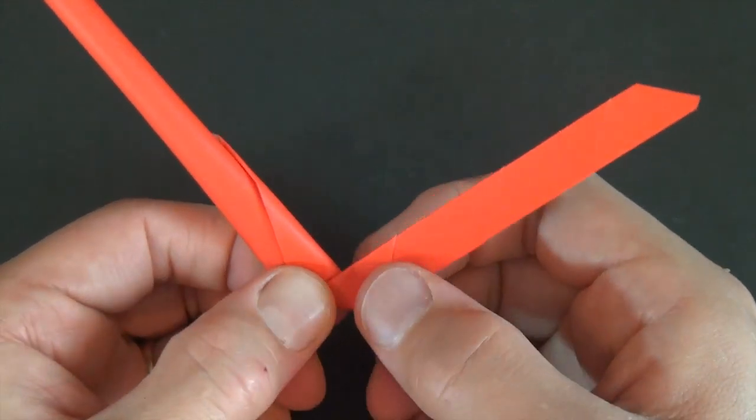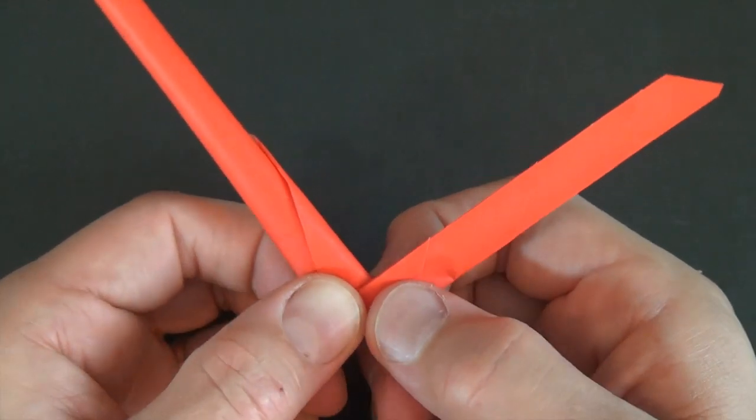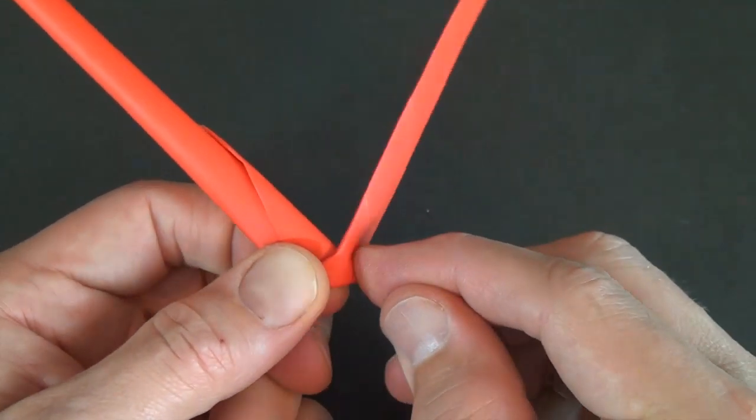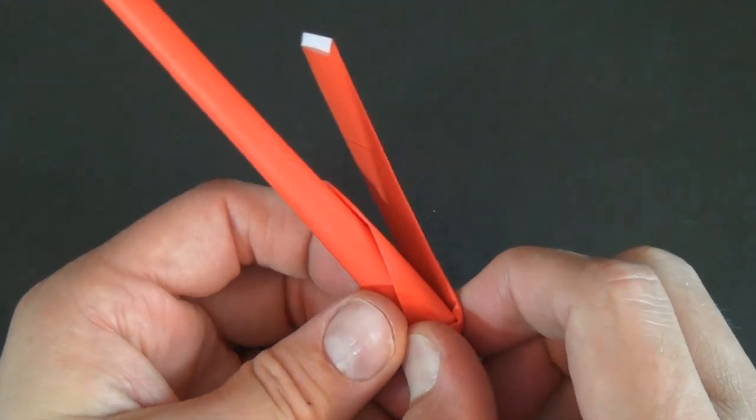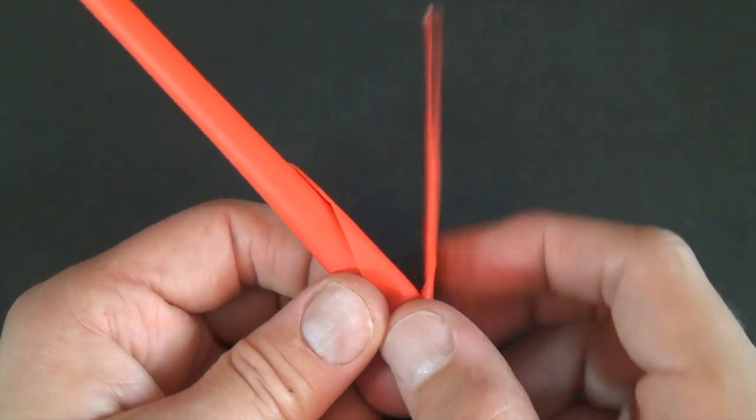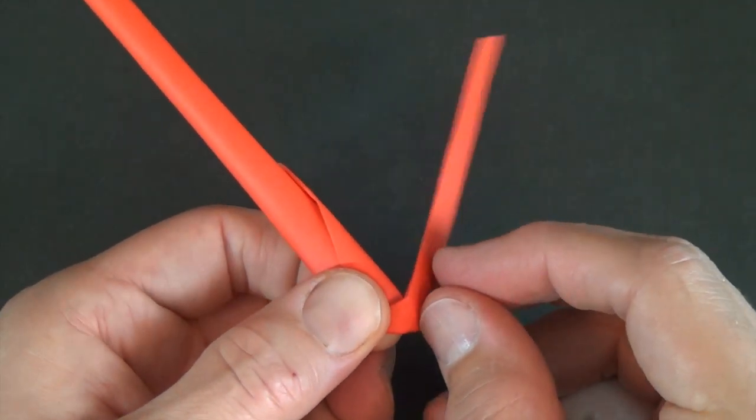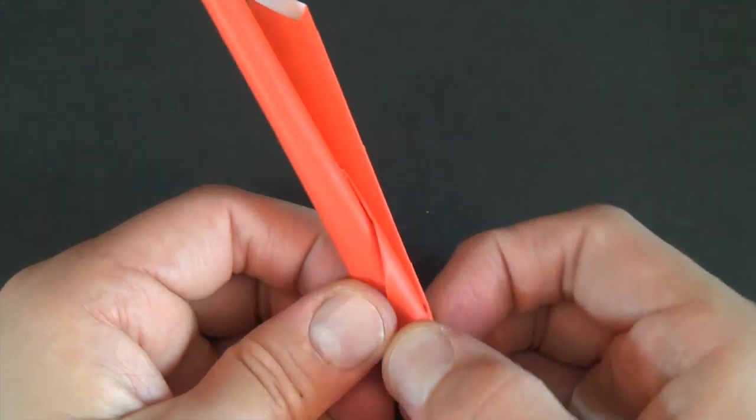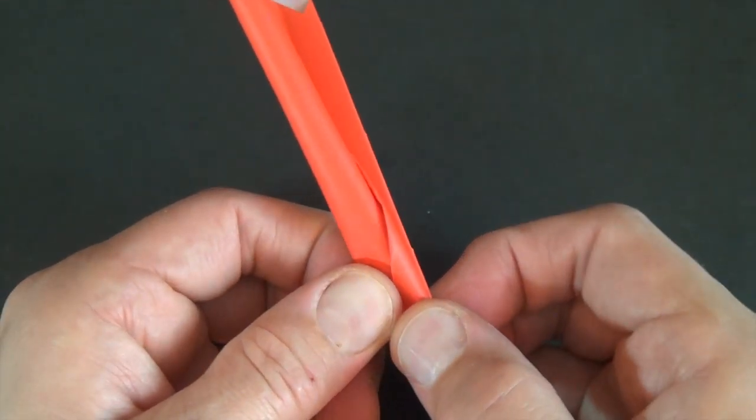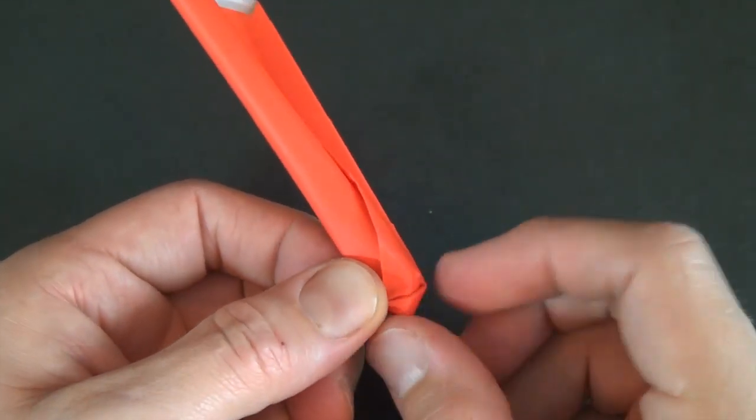And now we're going to take this whole thing and fold it behind. I know it's a lot of layers but that's what makes the dart go fast. We're going to fold this behind so that it goes right behind the tube and you end up with a very dense arrowhead right here.